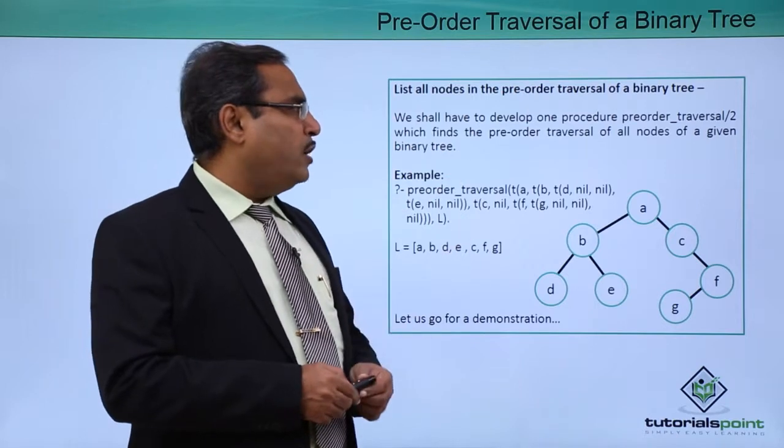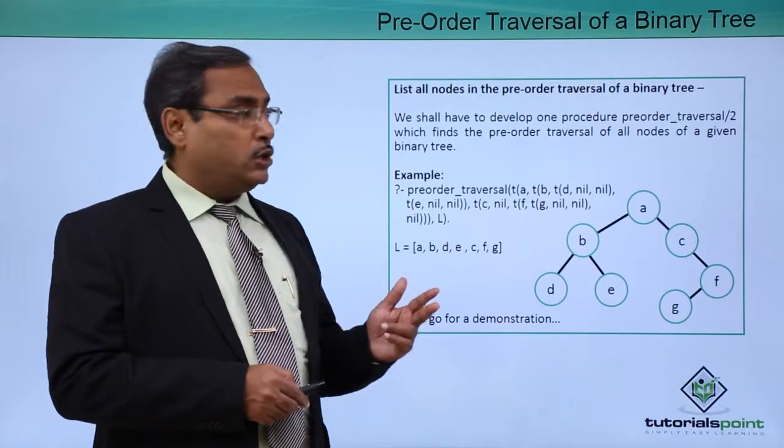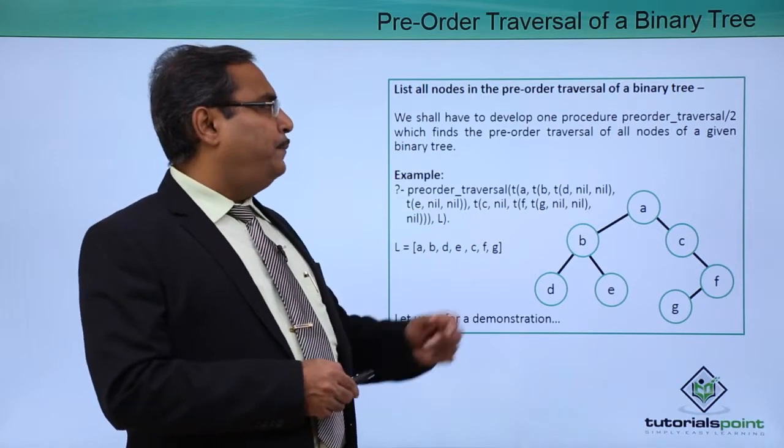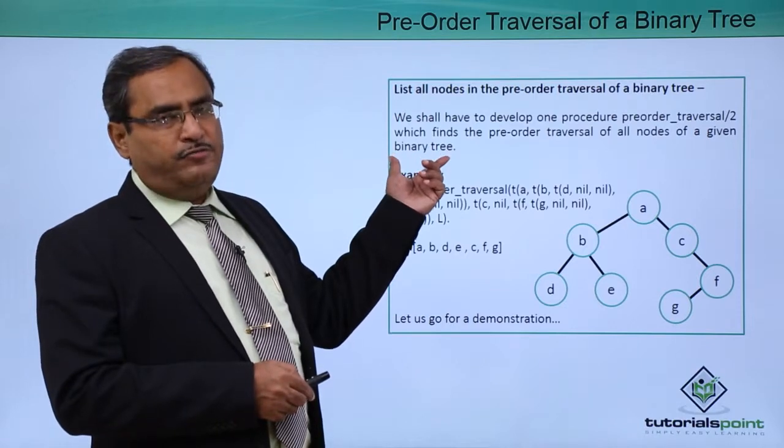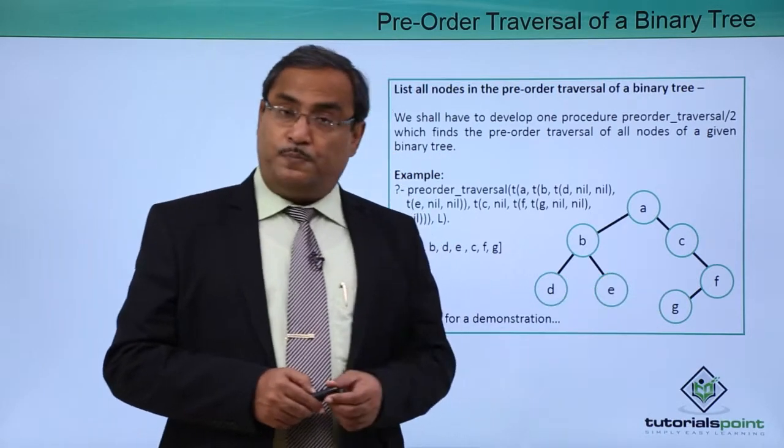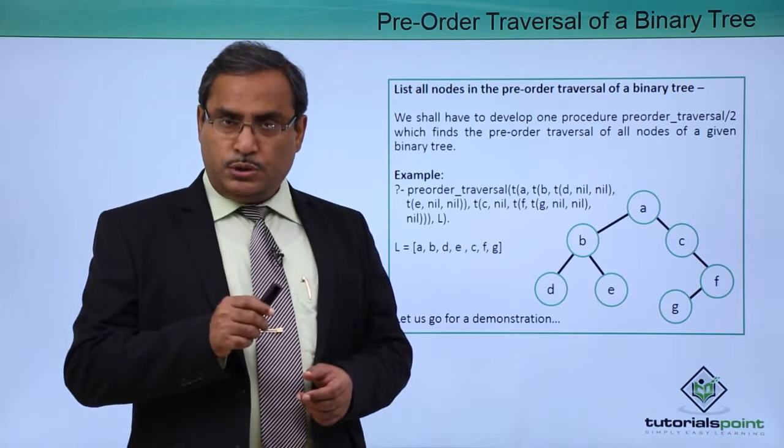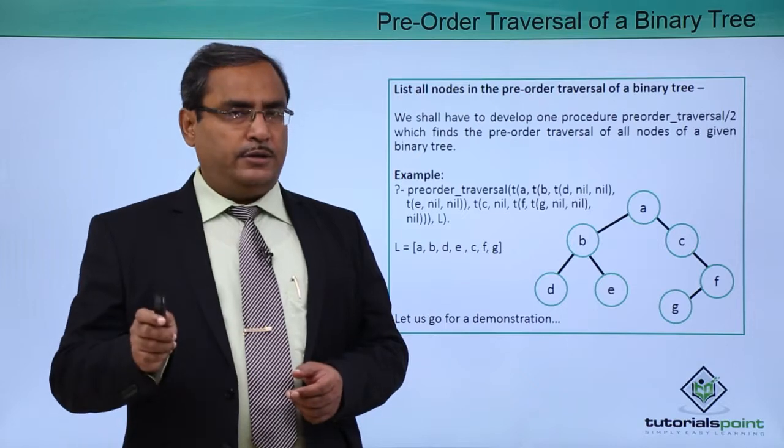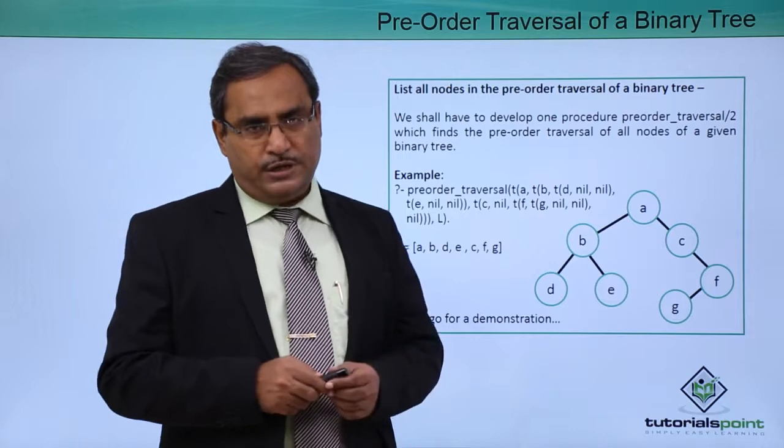We shall develop one procedure pre-order underscore traversal which will take two arguments and find the pre-order traversal of all nodes of a given binary tree. So this is our binary tree here given. Pre-order traversal means we should be going for root, then left, then right. In this sequence we shall traverse this tree.